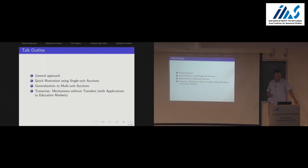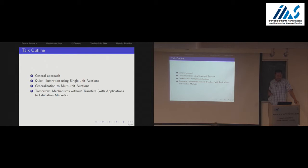Let me jump into what I want to talk about today. I'll set up the general approach — which I'm going to call the LaFont program, tied to what Jean-Jacques was teaching. Then I'll illustrate it with single-unit auctions briefly, since all of us are familiar with that environment and we have beautiful theory results. But I'll mostly focus on multi-unit auctions for more than half the talk, because theory there is not unambiguous — there are a lot of impossibility results that don't allow us to rank things in a general way.